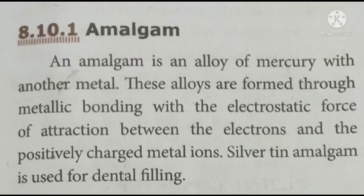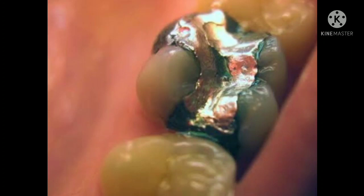The best example for amalgam is dental amalgam. To seal the cavity in the teeth, we use dental amalgam. The composition of dental amalgam is mercury fused or alloyed with silver and tin. This composition is called dental amalgam and it is used to seal the cavity. So, if you are alloying mercury with any other metal, that composition is called amalgam.